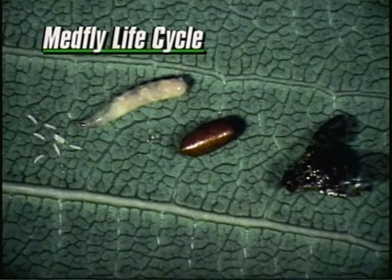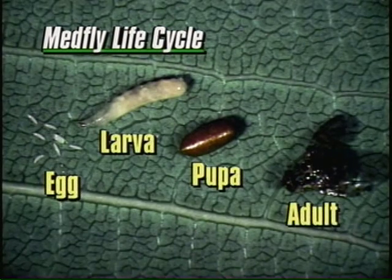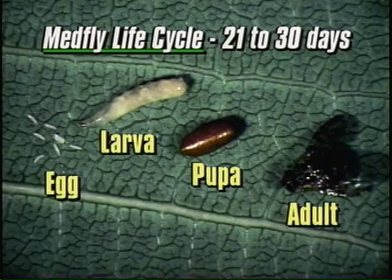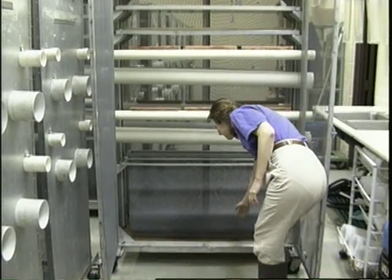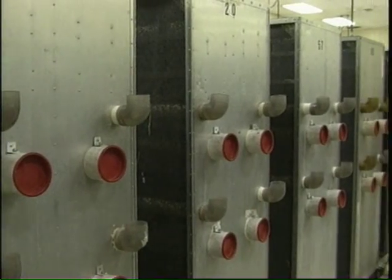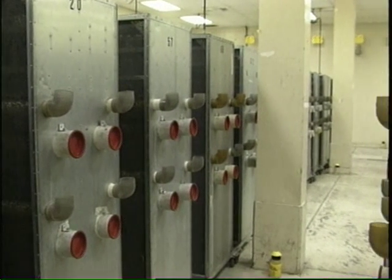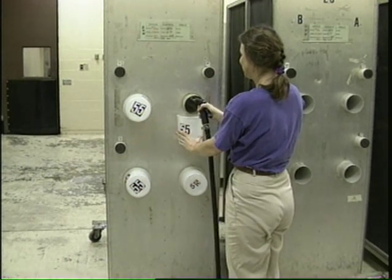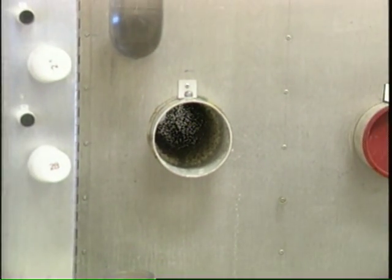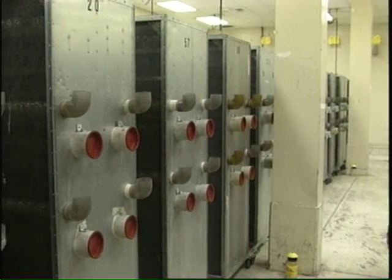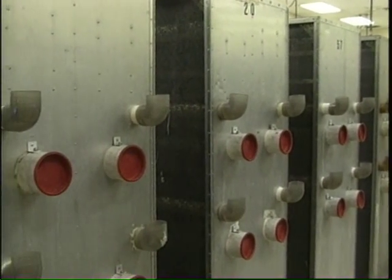The Mediterranean fruit fly cycle consists of egg, larva, pupa, and adult. Under ideal conditions, the life cycle can be completed in 21 to 30 days. Pupae are placed in the bottom of each cage. Emerging adults feed on a mixture of sugar and yeast. They mate and begin laying eggs in three days. Eggs deposited in the egging tubes are collected by washing out the tubes daily. Eggs are collected for five to six consecutive days, then the cage is washed for recycling. Each cage produces an average of six million eggs per day over a five-day collection period.